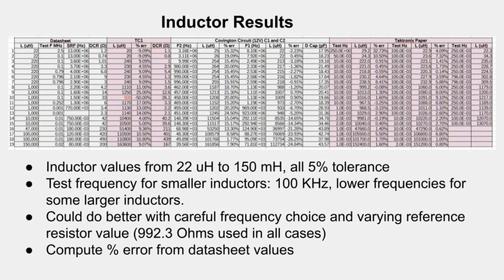So are the results always this good? The short answer is no. I tested 19 different inductors ranging from 22 microhenries to 150 millihenries, all 5% tolerance parts. I used a 100 kilohertz test frequency for the smaller inductors and lower frequencies for some larger ones. I produced a table of results. The key thing is the percent error in the inductance measurement compared to the datasheet value, and all results were within 10% of the datasheet value. The Tektronix method could work even better with more carefully chosen resistor values and frequency choices.